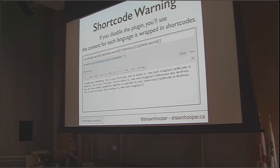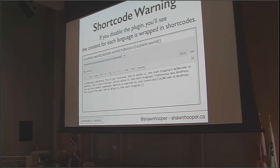Any piece of the screen that has a red border on the left-hand side is managed in QTranslate X so that it can be translated. The only things you cannot set specifically by locale are the URL, the permalink, and any custom fields — those are shared across all translations. QTranslate does this using shortcodes behind the scenes — if you were to turn off the plugin, you'd see shortcodes separating the language codes between each phrase, keeping everything in the one post ID.